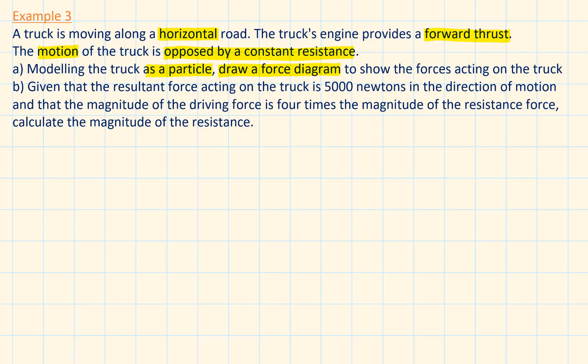For point B, given that the resultant force acting on the truck is 5000 newtons in the direction of motion and that the magnitude of the driving force is 4 times the magnitude of the resistance force, calculate the magnitude of the resistance.